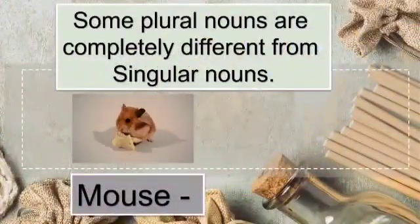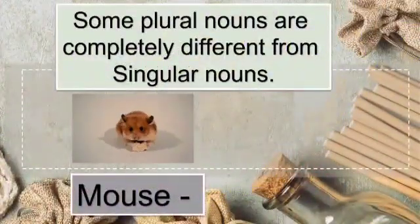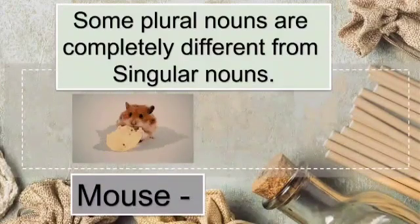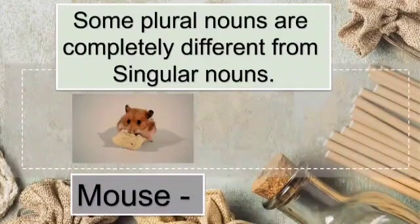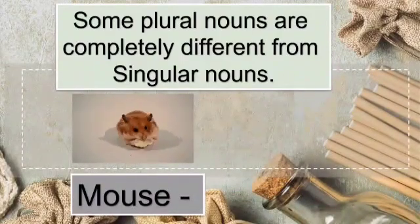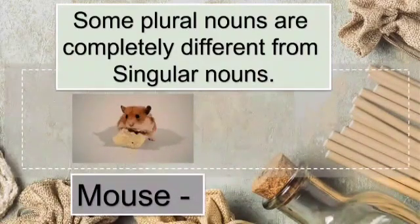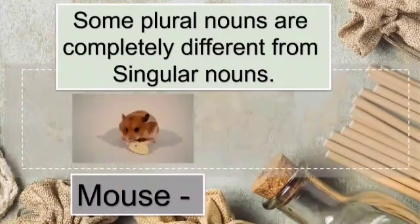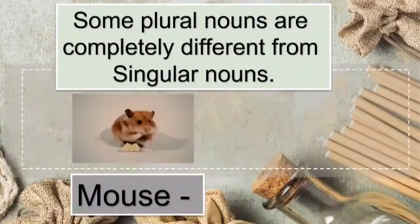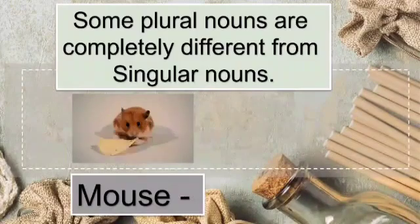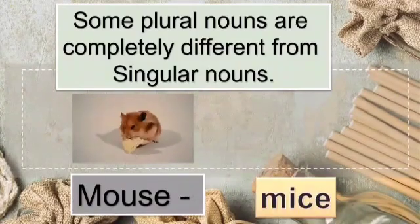Some plural nouns are completely different from their singular form — the spelling is completely different. For example, in singular we say mouse, but in plural form it becomes mice.